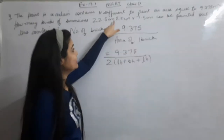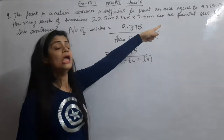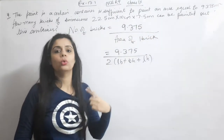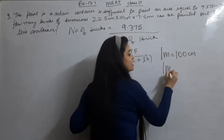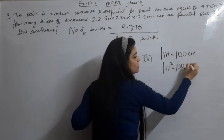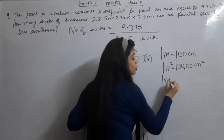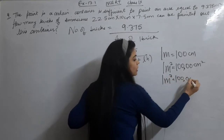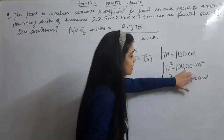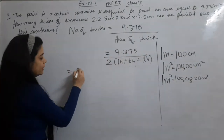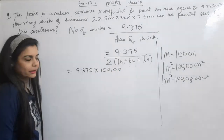The question is that the brick dimensions are in centimeters but the area is in meter square, so we need to convert. One meter equals 100 centimeters, so 1 meter square equals 10,000 centimeter square, and 1 meter cube equals 1,000,000 centimeter cube. So I convert: 9.375 into 10,000 gives us the area in centimeter square.